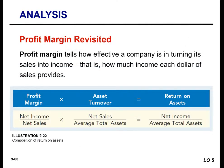In Chapter 5, we talked about profit margin. The profit margin ratio is calculated by dividing net income by net sales, and it tells us how effective a company is at turning its sales into income — how much income each dollar of sales provides. The return on assets can be computed from the profit margin and the asset turnover: profit margin multiplied by asset turnover equals return on assets. Profit margin equals net income divided by net sales, and asset turnover equals net sales divided by average total assets.